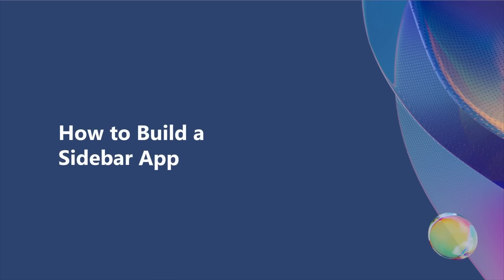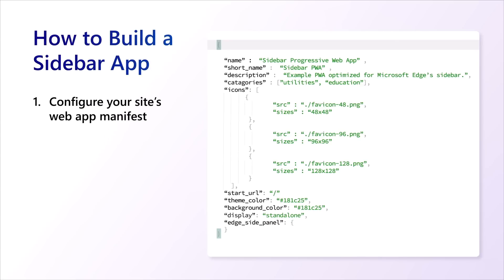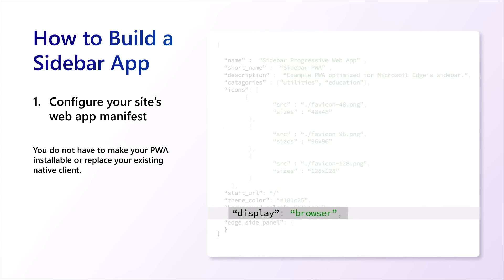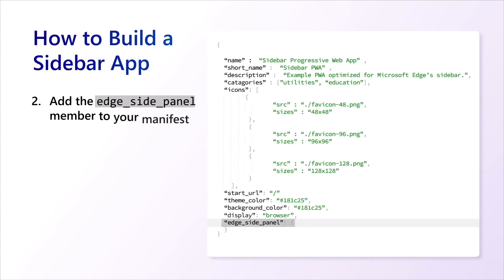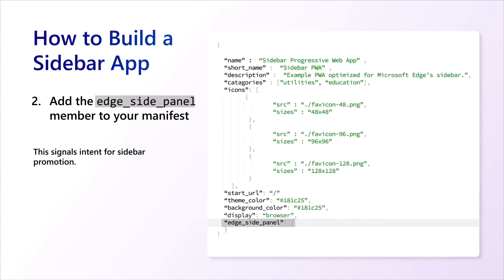Let's take a look at how to build a sidebar app. First, you'll need to configure your site's web app manifest, which is a JSON file hosted on your server with information about your app's appearance and capabilities. Adding this manifest doesn't necessarily mean that your site is going to be installable as a native mobile or desktop app. If you wish to target only the sidebar, simply set the display member to browser. Next, add the Edge side panel member to your manifest.